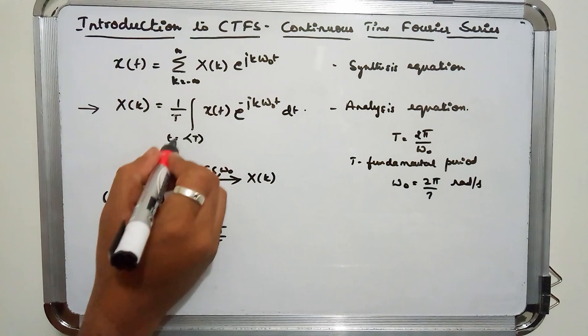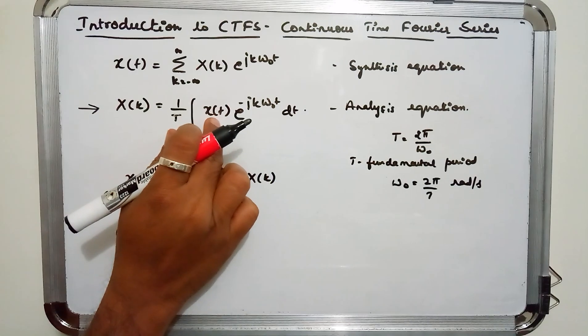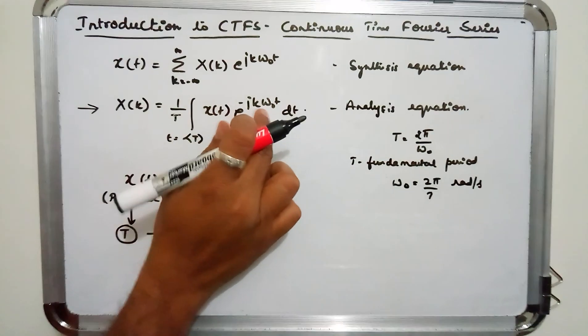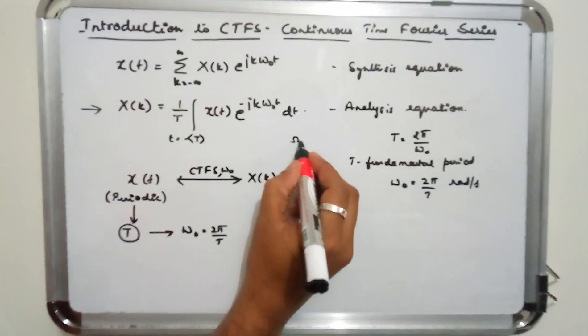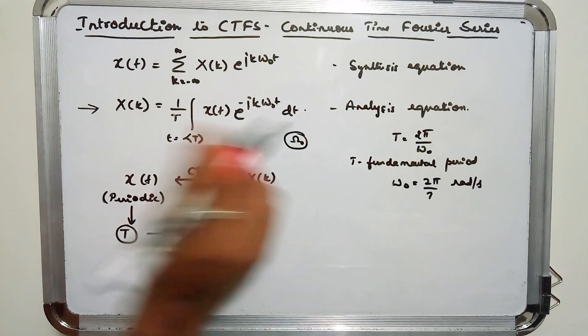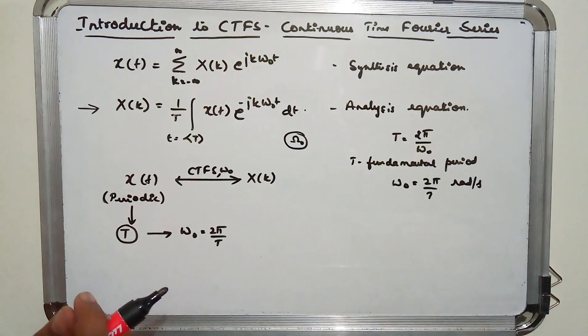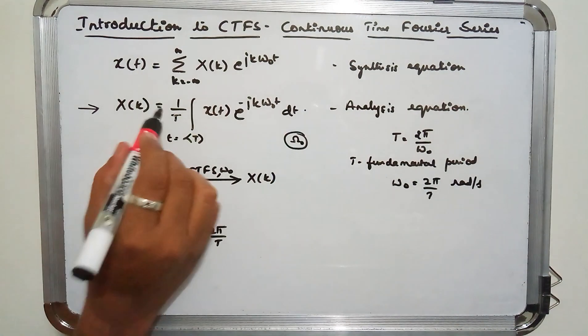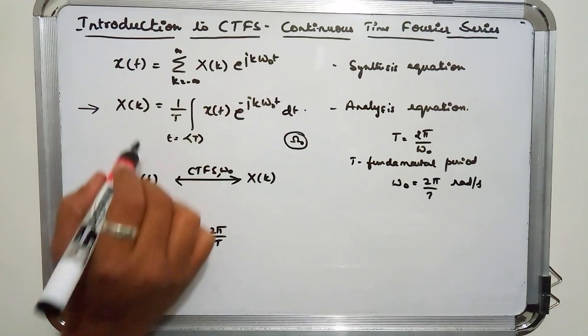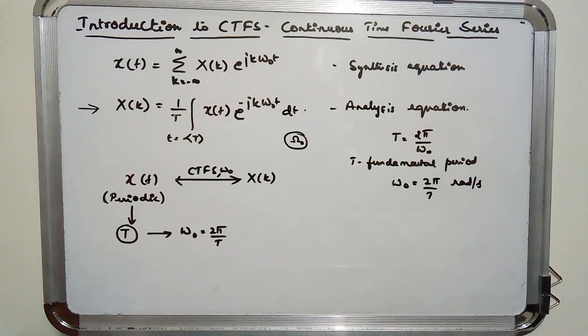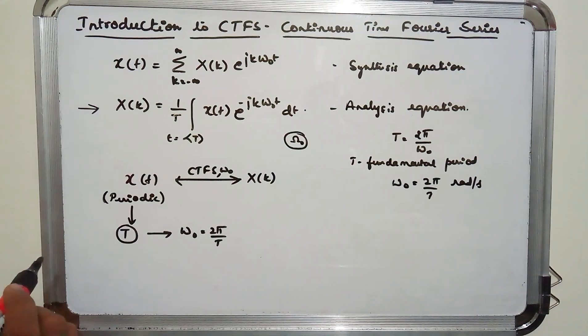Now except for the fact that you had summation over entire n, X(t) was replaced by X(n), e power minus j k omega 0 was replaced by this omega 0 in case of discrete time Fourier series and divided by the period. There we had 1 by n, here it is 1 by T. So this is the analysis equation.